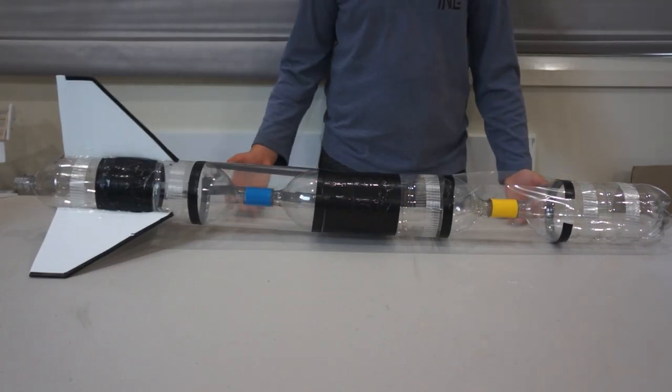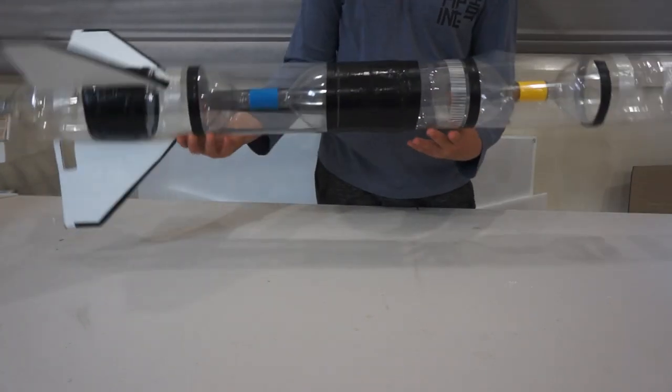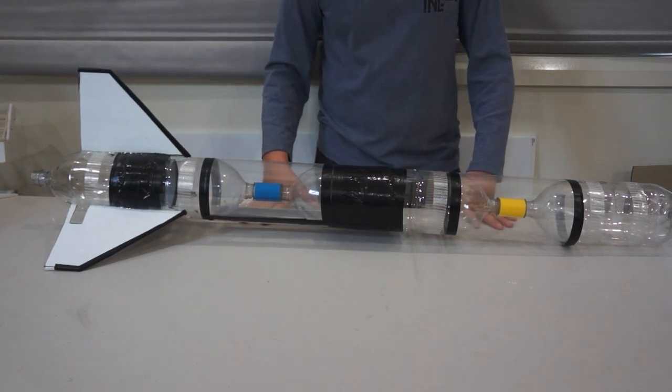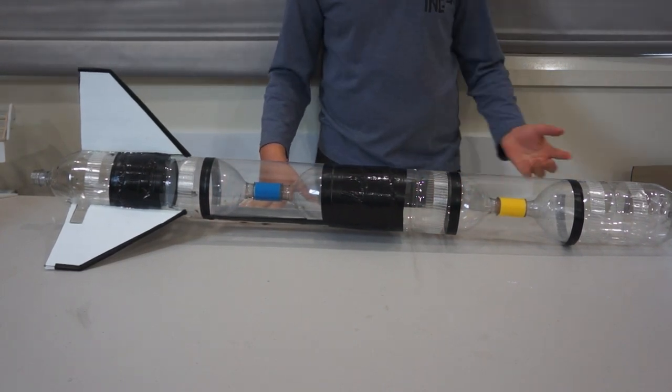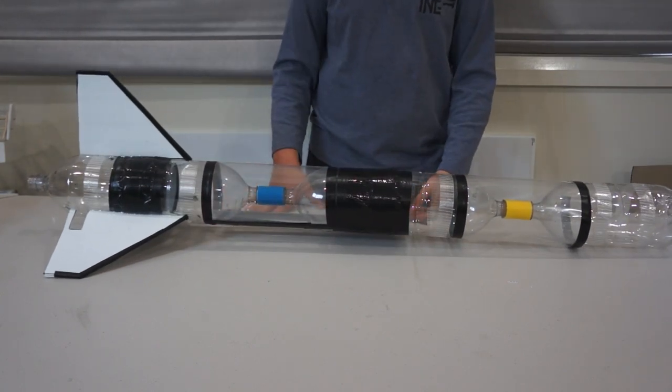Now, so that's the body and the fins done. So in the next video or part two, I'll be showing you how to make the launcher and the parachute for the rocket. Okay. See you then. Thanks for watching. Bye-bye.